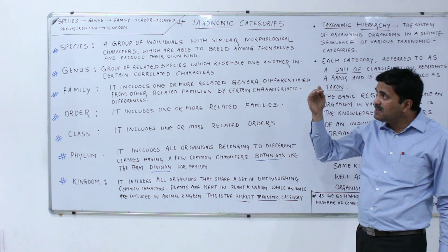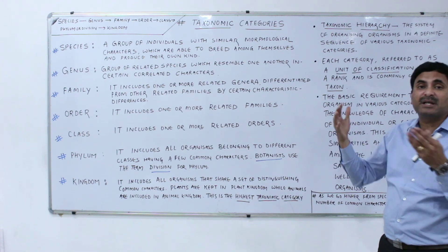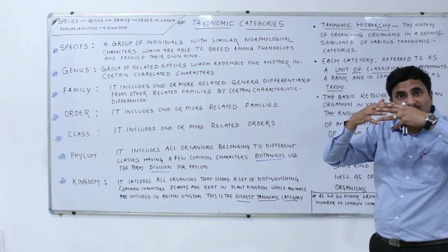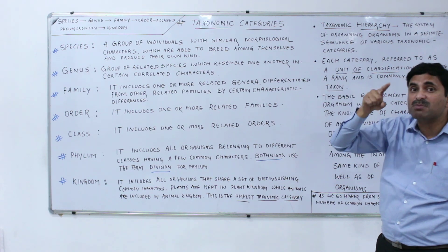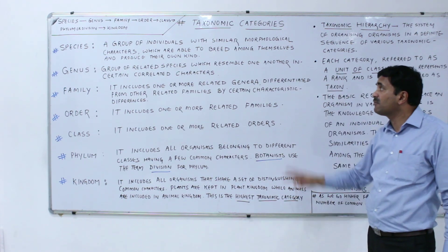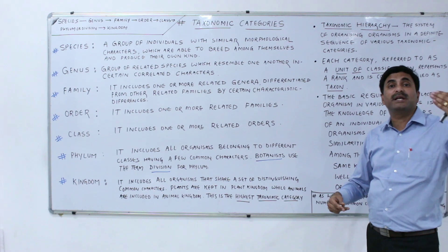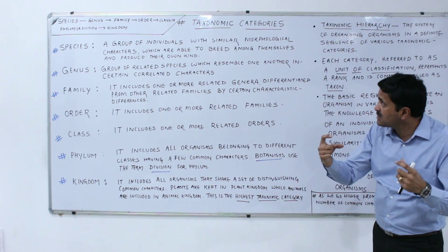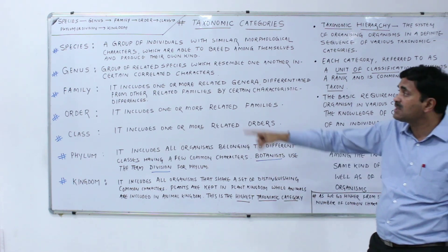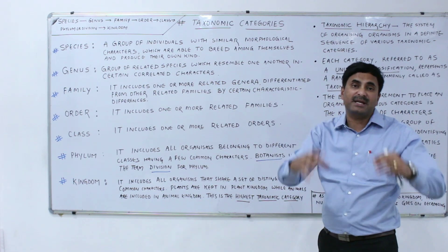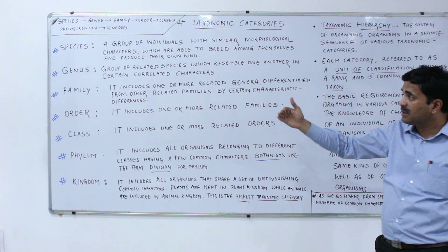Coming to the next higher category, the genus. Genus is a group of related species — many species always form a genus. The species must be related to each other. A group of related species which resemble one another in many characteristics is called a genus. In short, many related species combine together to form a genus.